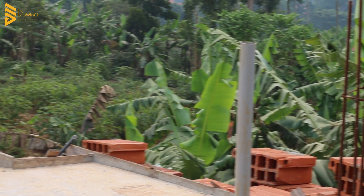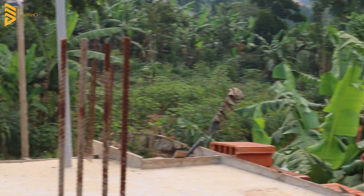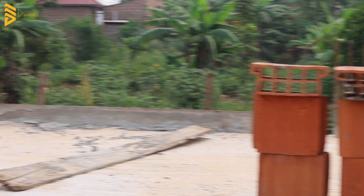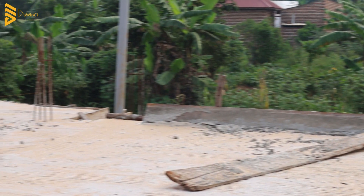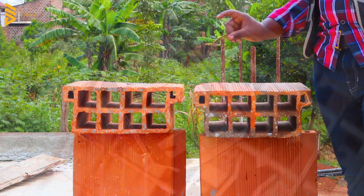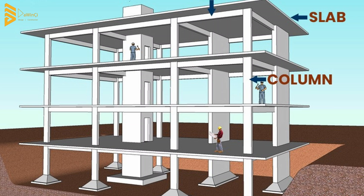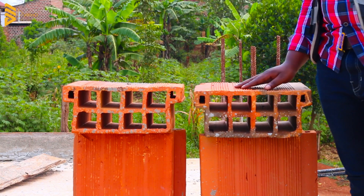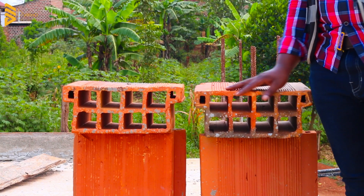Basically, a lot of you see high-rise commercial buildings and notice the slabs are very thin, very sleek and looking really nice. Then you ask yourselves: in what scenarios do people use solid slabs, and in what scenarios do people use hollow slabs?